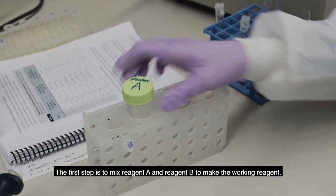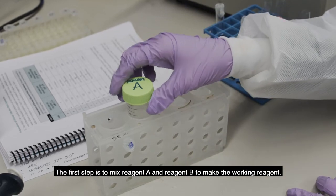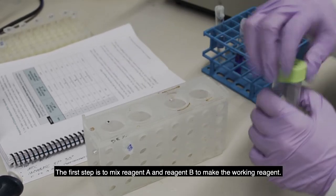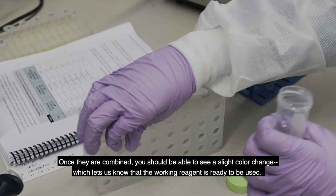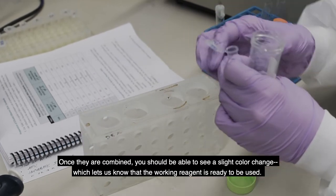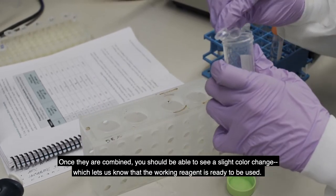The first step is going to be to mix reagent A and reagent B to make the working reagent. And once they're combined, you should be able to see a slight color change, which lets us know that the working reagent is ready to be used.